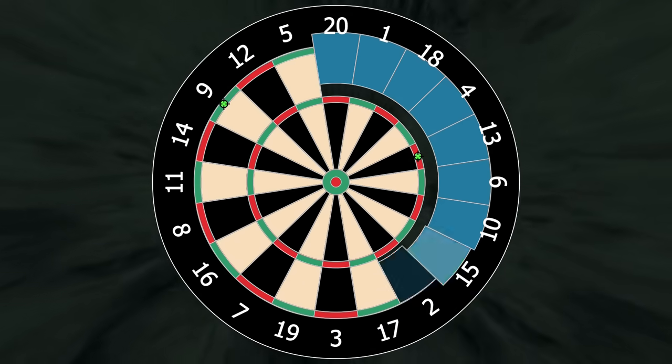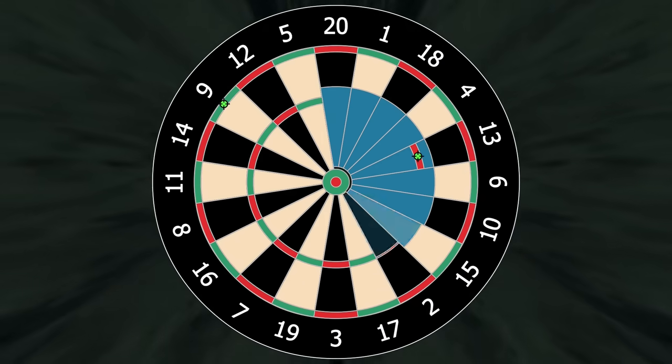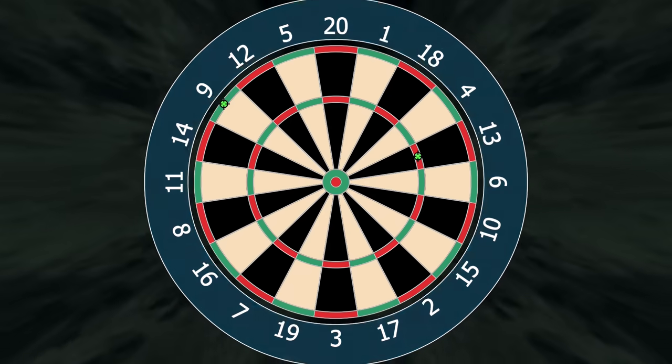Hitting a number in either this fat section here or this skinny section just gives you that single number. If you're outside all of these segments, you score 0.